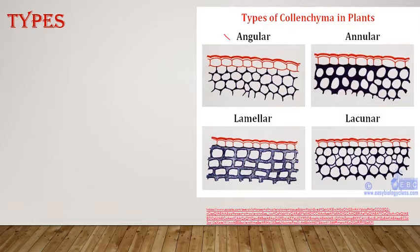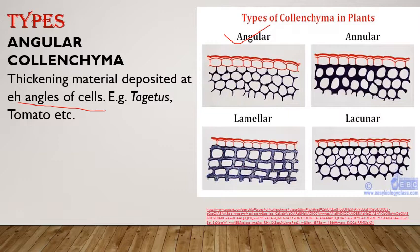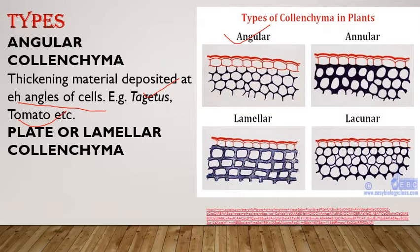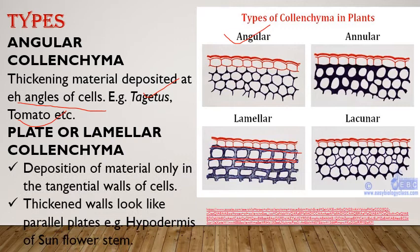There are four types of colenchyma. First is angular — thickenings are present at the angles of the cell, for example in Datura and tomato. Second is lamellar or plate — thickenings appear like parallel plates, present in the hypodermis of sunflower stem. Third is lacunate — uniformly thickened cells where thickening is on the walls bordering intercellular spaces, for example in the hypodermis of Cucurbita stem.